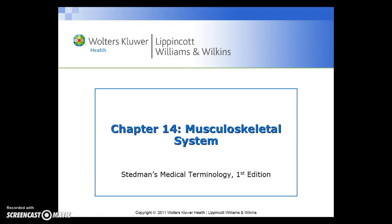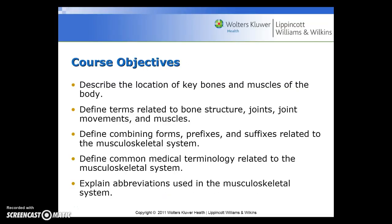Welcome to chapter 14, the musculoskeletal system. We will begin with the course objectives. In this chapter, you're going to locate the key bones and muscles of the body, terms related to bone structure, joints, joint movements, and muscles, combining forms, prefixes, and suffixes related to the musculoskeletal system. Common medical terminology and abbreviations used in the musculoskeletal system. This is a lot of information in this chapter, so I would read and practice and listen so that you grasp all of the concepts in this chapter.